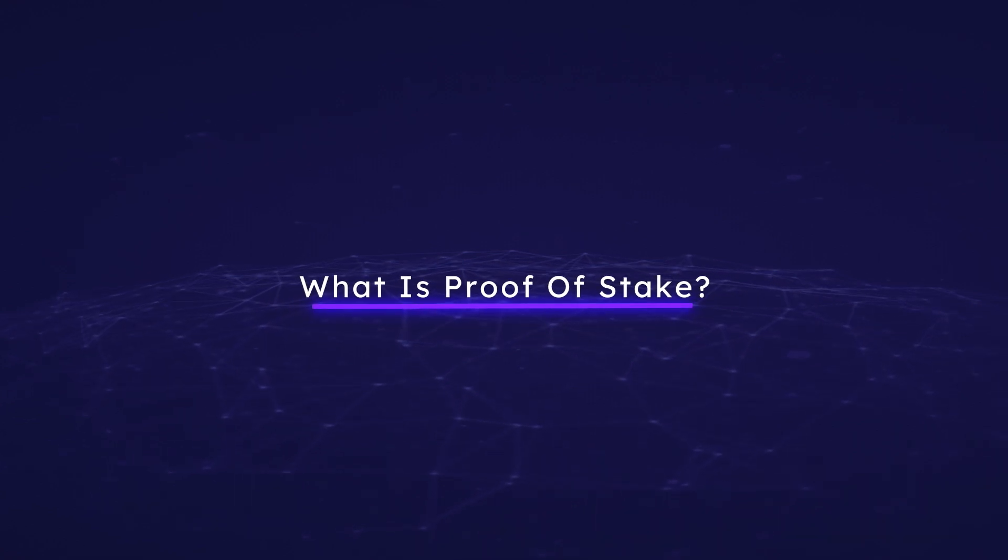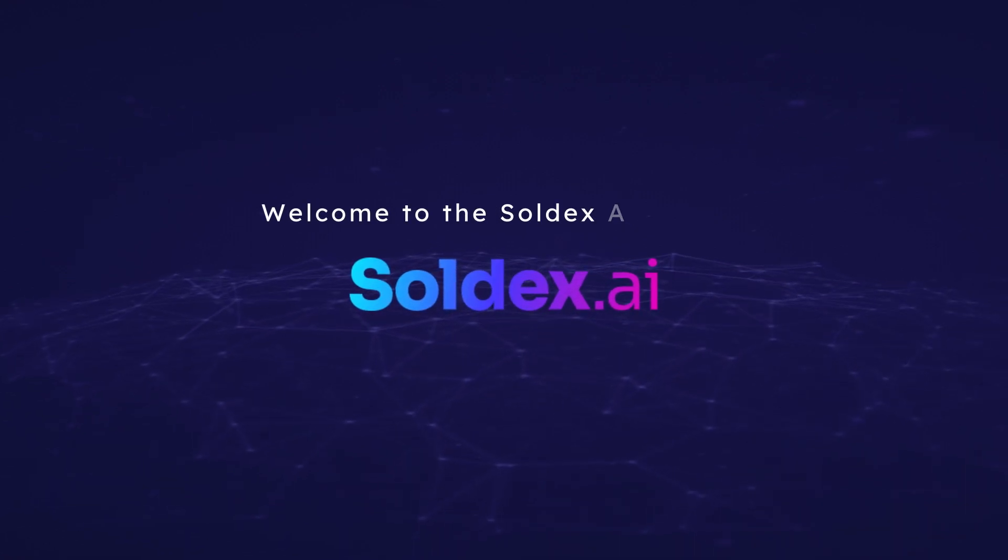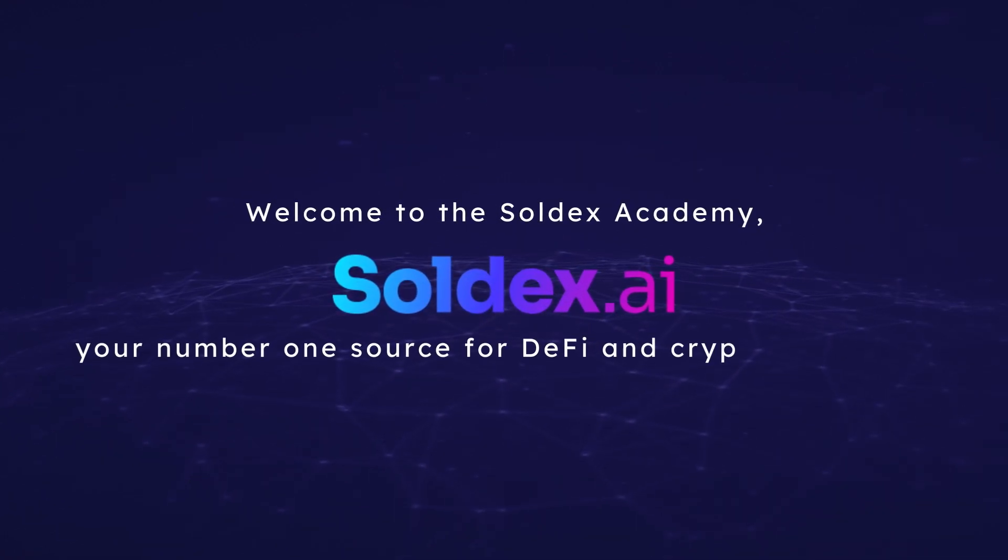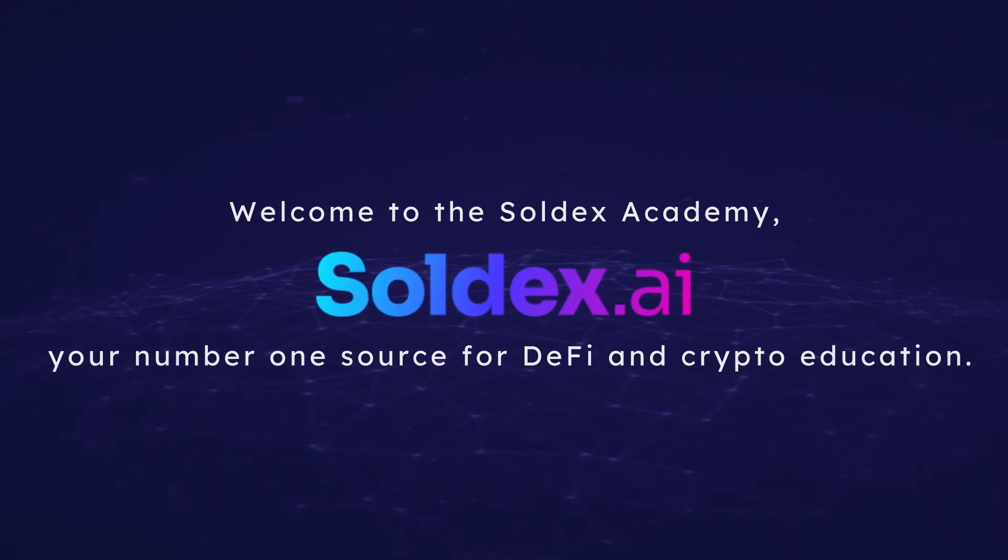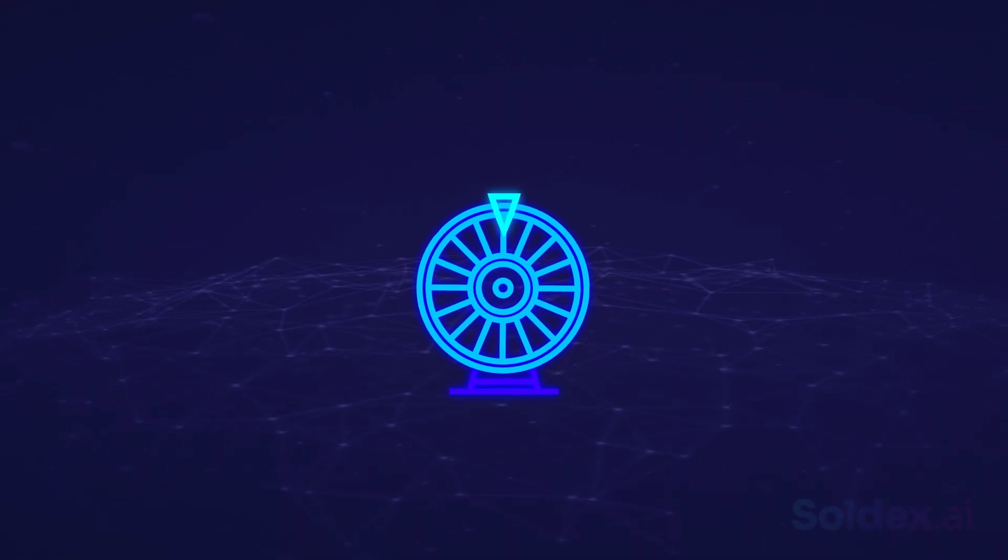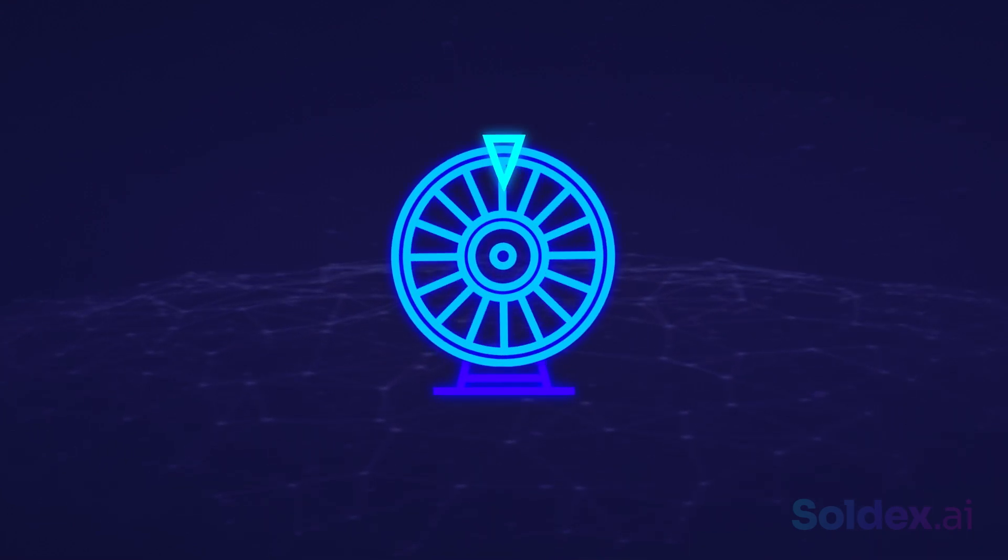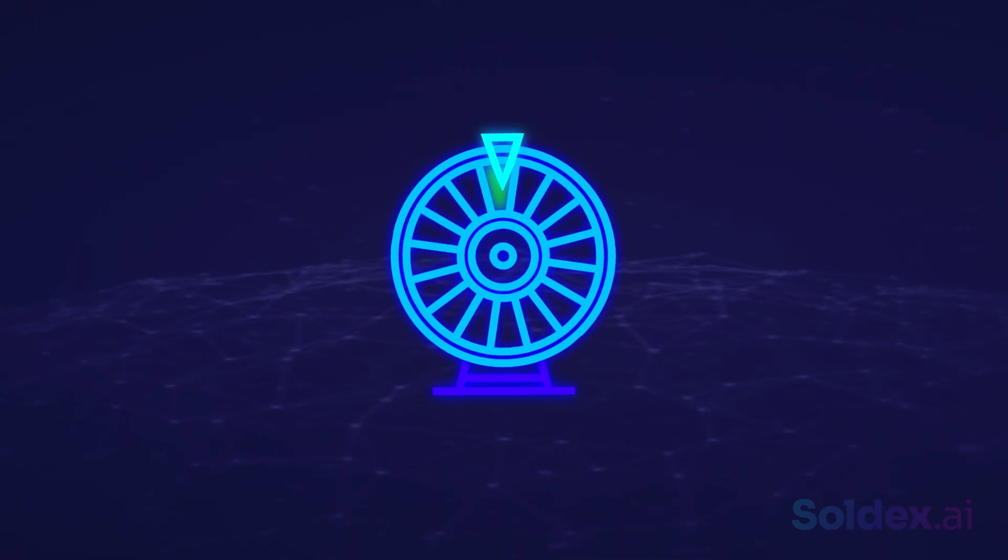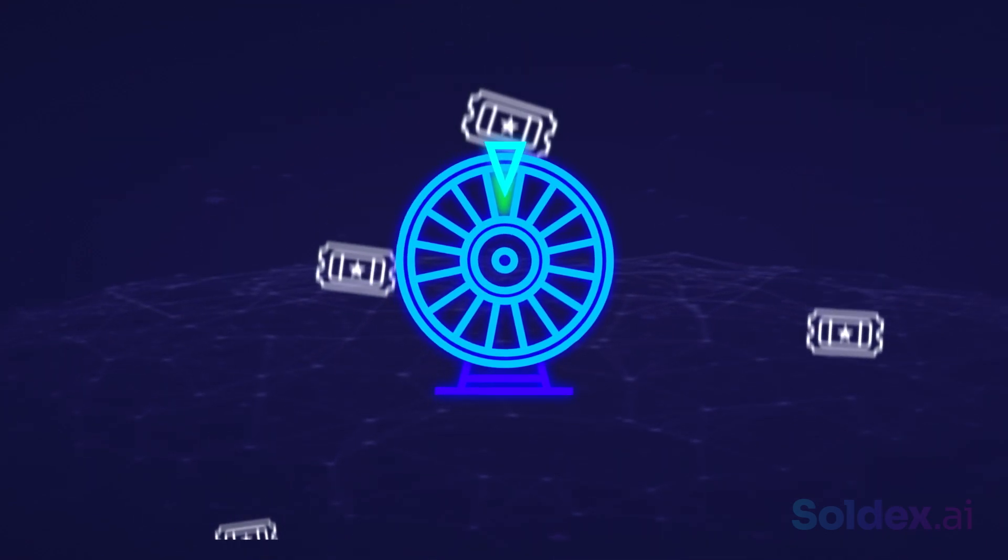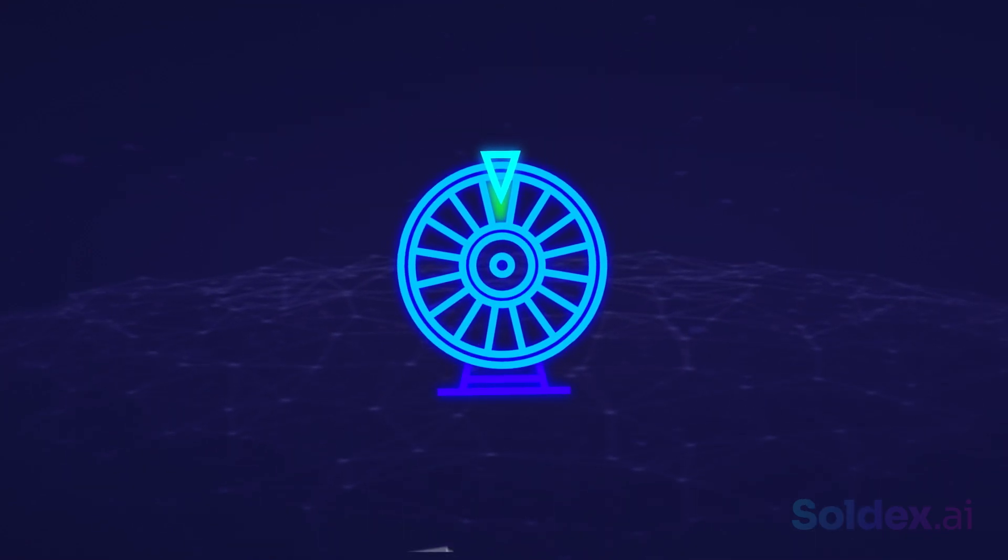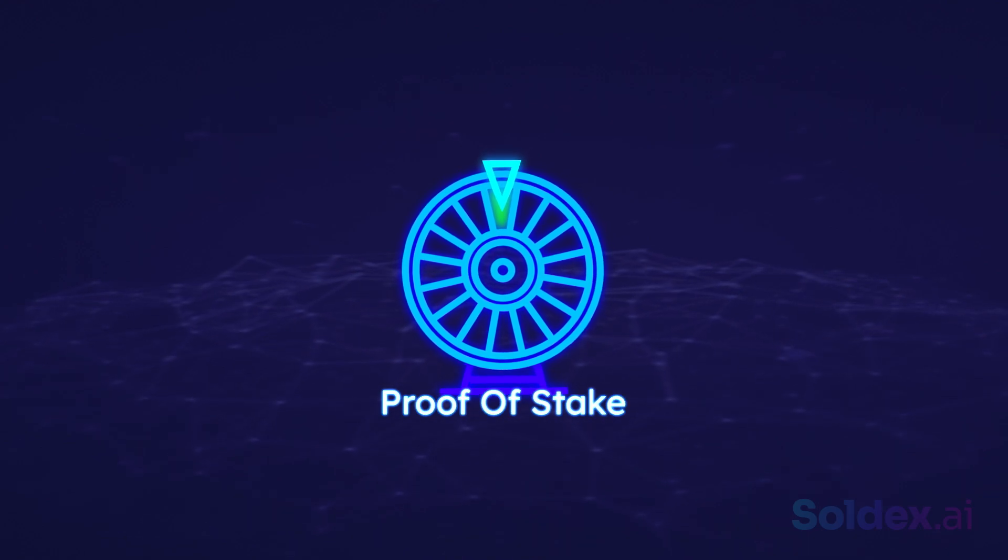What is proof of stake? Welcome to Soldex Academy, your number one source for DeFi and crypto education. You probably know how the lottery system works. It's a system of selling tickets and giving prizes to those people whose numbers are chosen randomly. The more tickets you buy, the more chances you have of winning. That's similar to how proof of stake works.